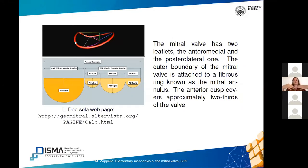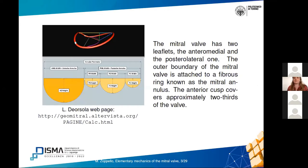The mitral valve has two leaflets — the anteromedial one and the posterolateral one. The outer boundary of the mitral valve is a path called the mitral annulus. In the picture on the left you can see the mitral annulus as the red thick curve, and in the picture below the valve is displayed as if the annulus were cut and laid flat. The anterior cusp covers roughly two-thirds of the valve, while the posterolateral one, composed of three scallops, is smaller.